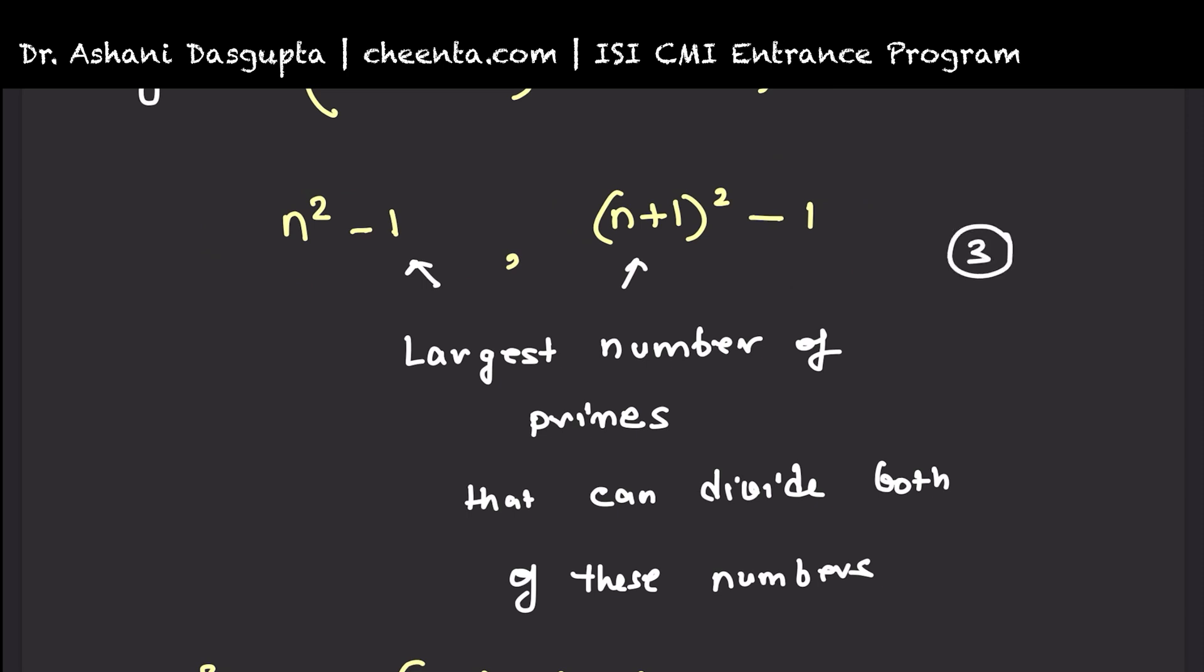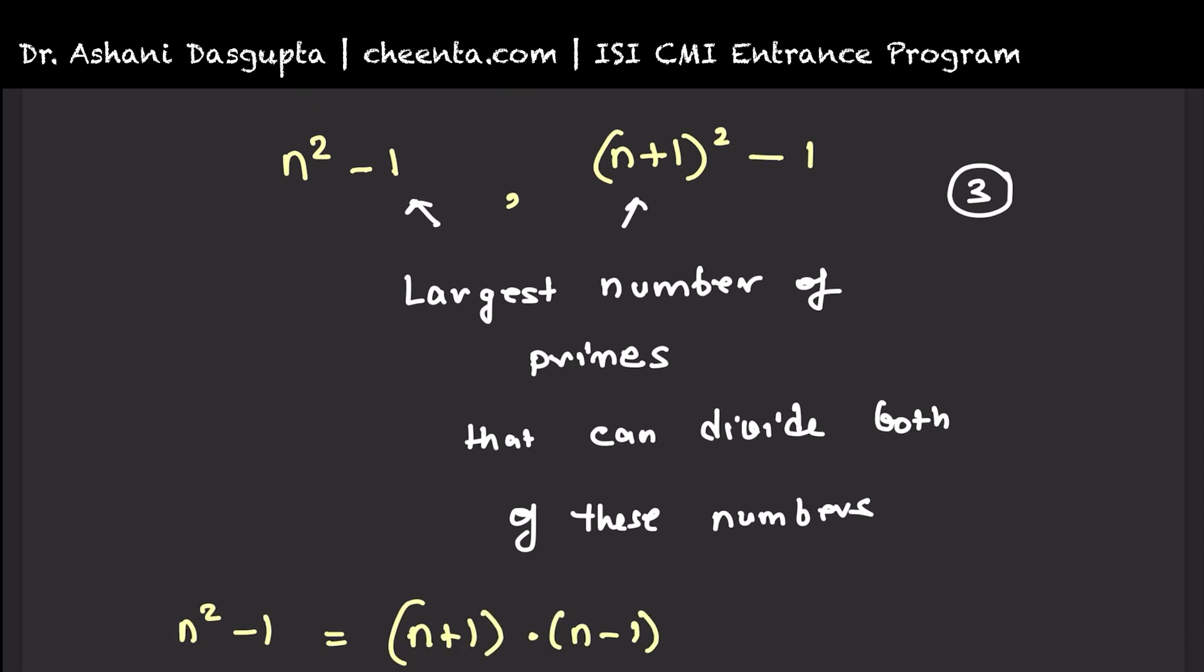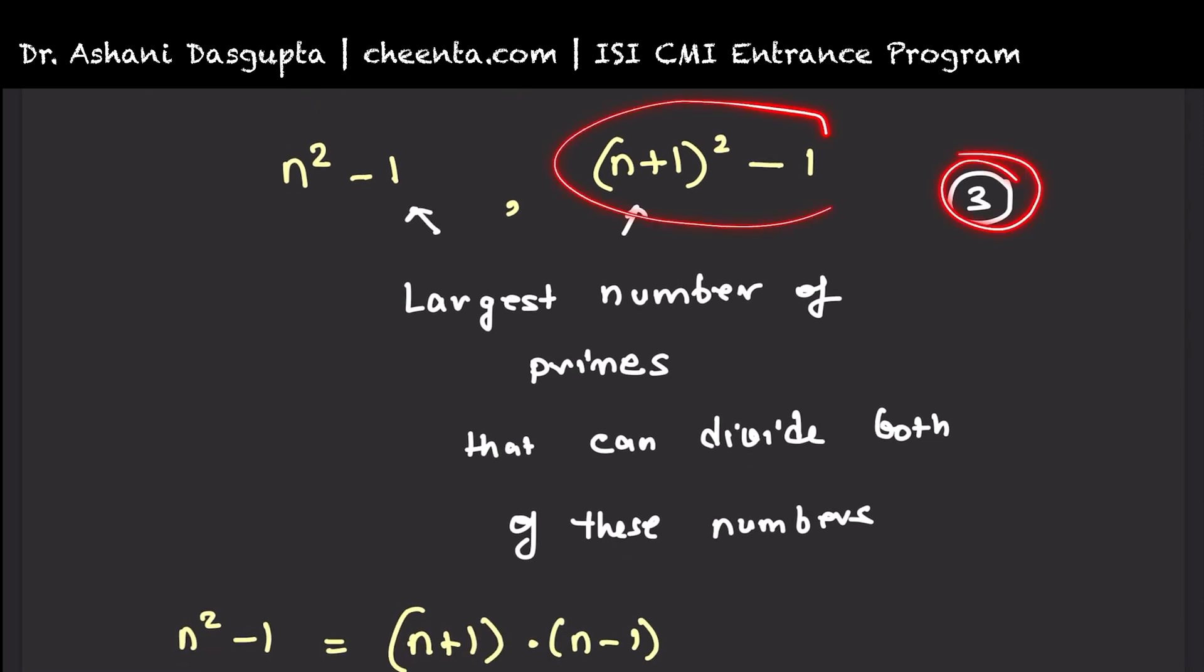I am not saying that 3 will always divide both of them. That's the subtle thing that you have to understand. I am saying, if possible, only 3 could divide both of these numbers.